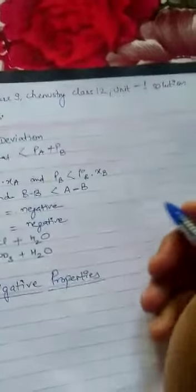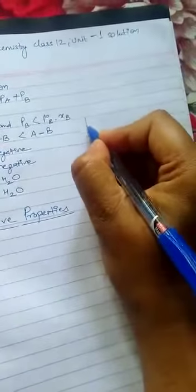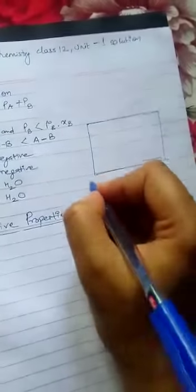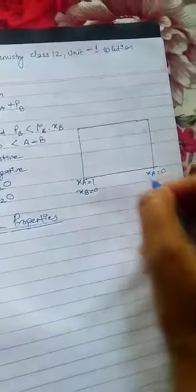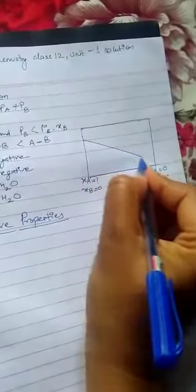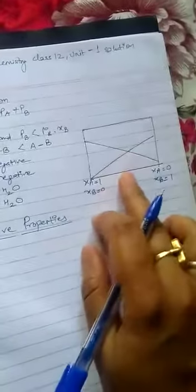Now, if we have to plot the graph just like the positive deviation, then in the case of negative deviation the graph will be like this: here XA equals 1, XA equals 0, XB equals 0, and here XB equals 1. This is the graph for the ideal solution — this straight line represents P total for the ideal solution.